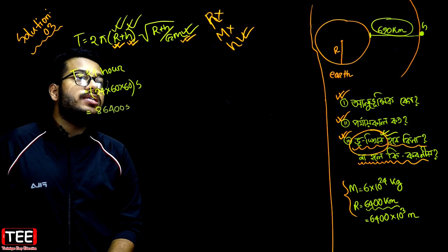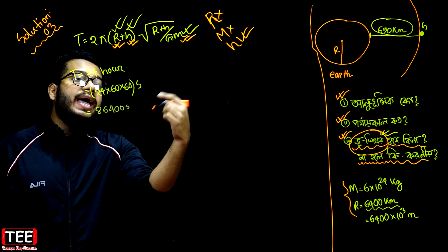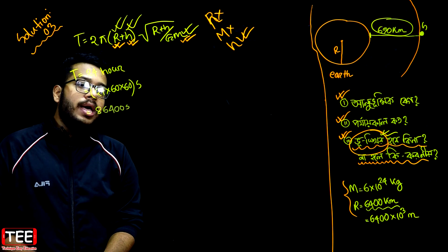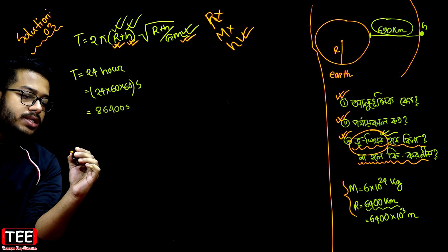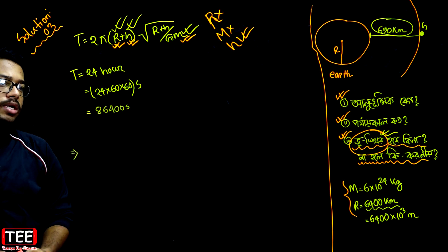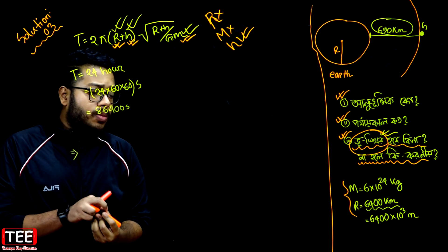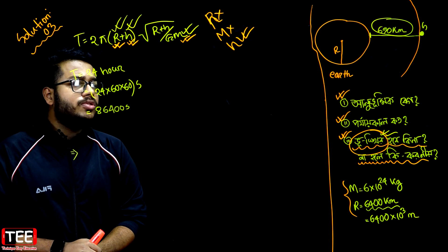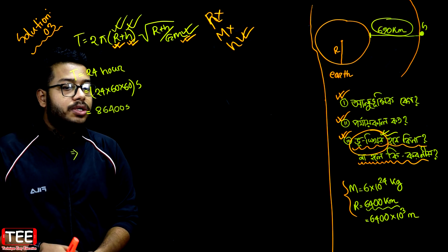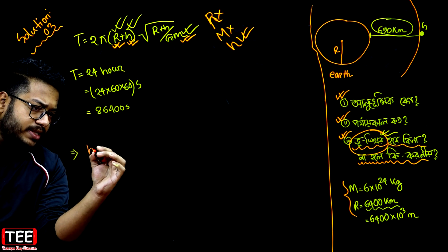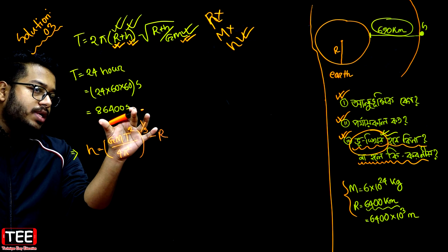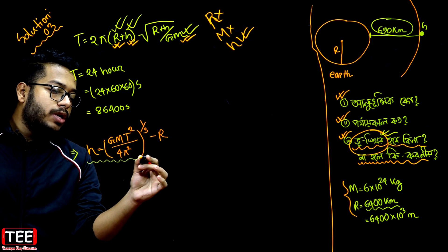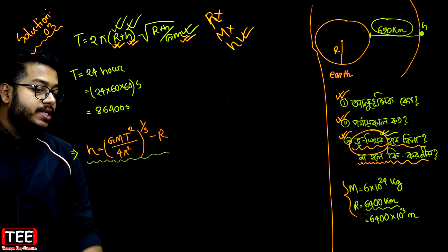Now, the period value T is 86400 seconds. So if we have a question about the satellite, we have a derivative. So we will use this equation. H is equals — we derive the formula for H.